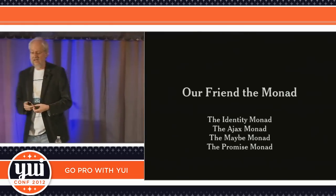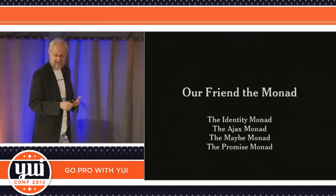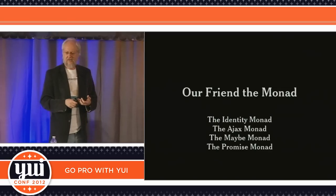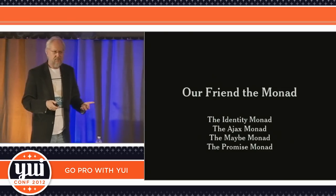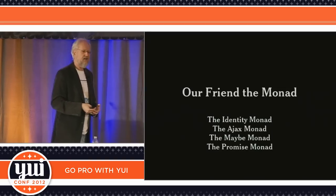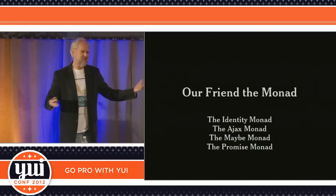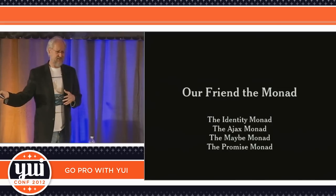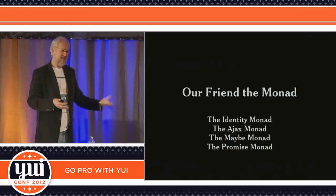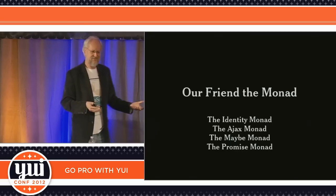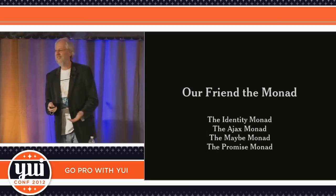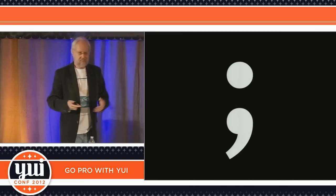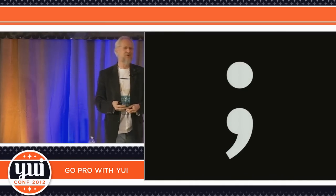So to recap: we saw the identity monad, the Ajax monad, the promise monad, and the maybe monad. Lots of great monads. And it's not that hard — it's really just stuff that returns stuff like itself. It's kind of amazing that all these guys have been running around saying monad in mixed company like it was some big deal. It's really pretty simple. It's something we've always done. We just didn't know. So until next time, don't forget your semicolons. Thank you and good night.